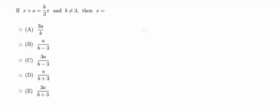Hey guys, welcome back. Today we're doing number 32, and the question says, if x plus a equals b over 3x, and b cannot equal 3, then x equals what?